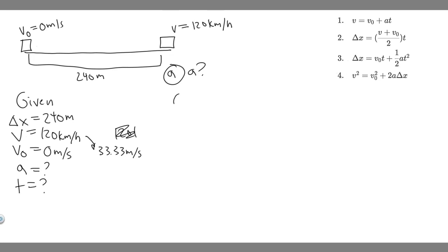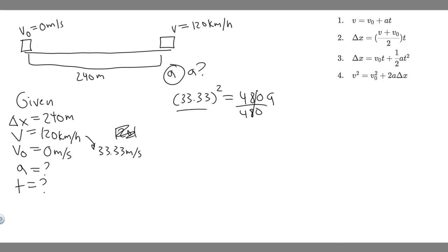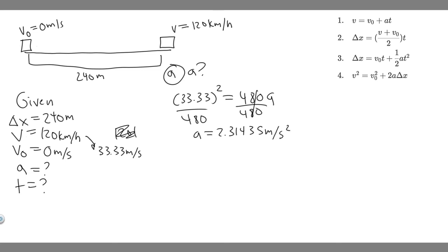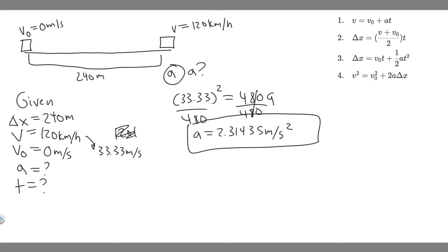Now we can solve Part A. We use the equation v² = v₀² + 2aΔx. Plugging in: 33.33² = 0² + 2 × a × 240, which simplifies to 480a. Dividing both sides by 480 gives a = 33.33² / 480 ≈ 2.31435 meters per second squared. You can round as needed, but keep in mind we used a slightly rounded value of 33.33, so adding more decimal places gives a more exact answer.